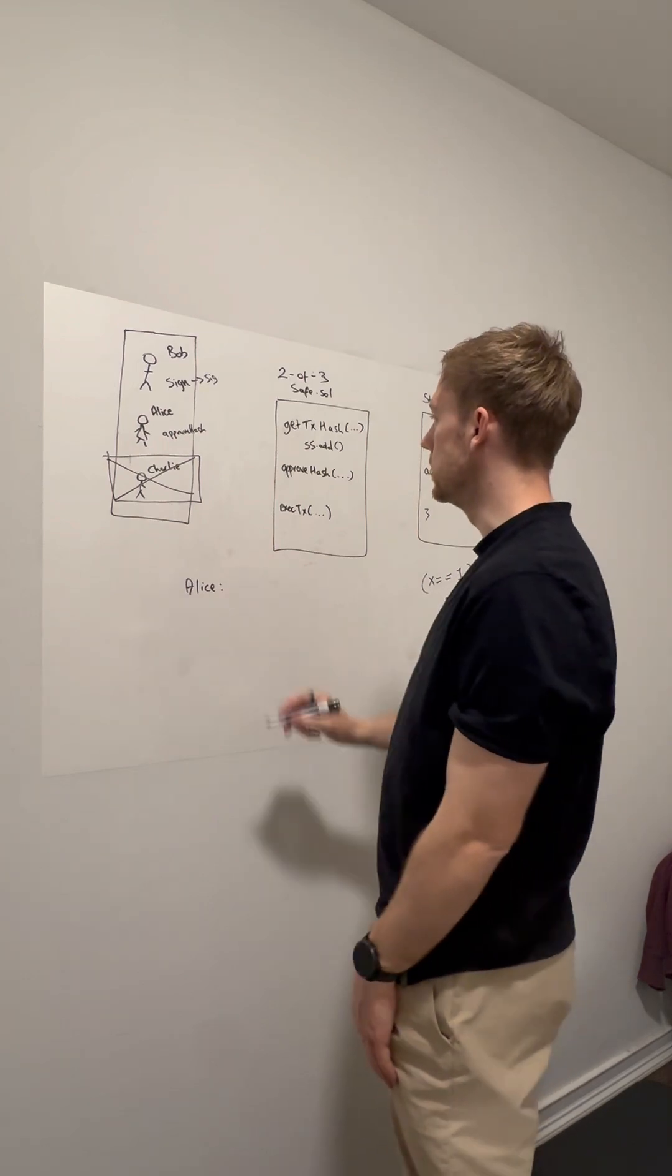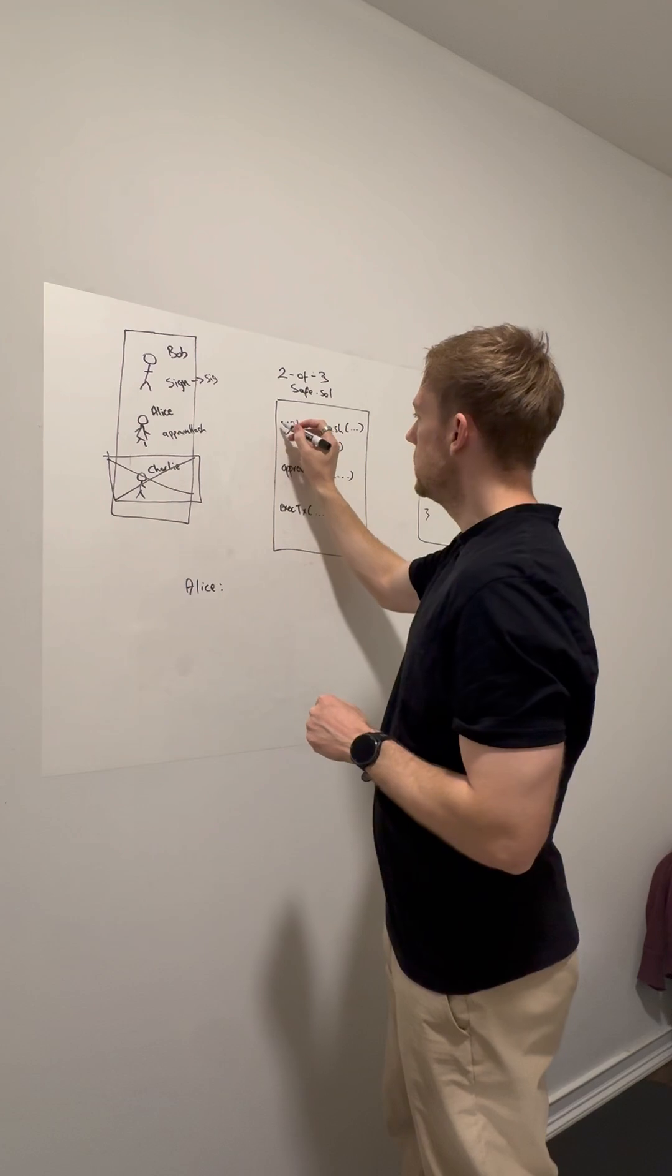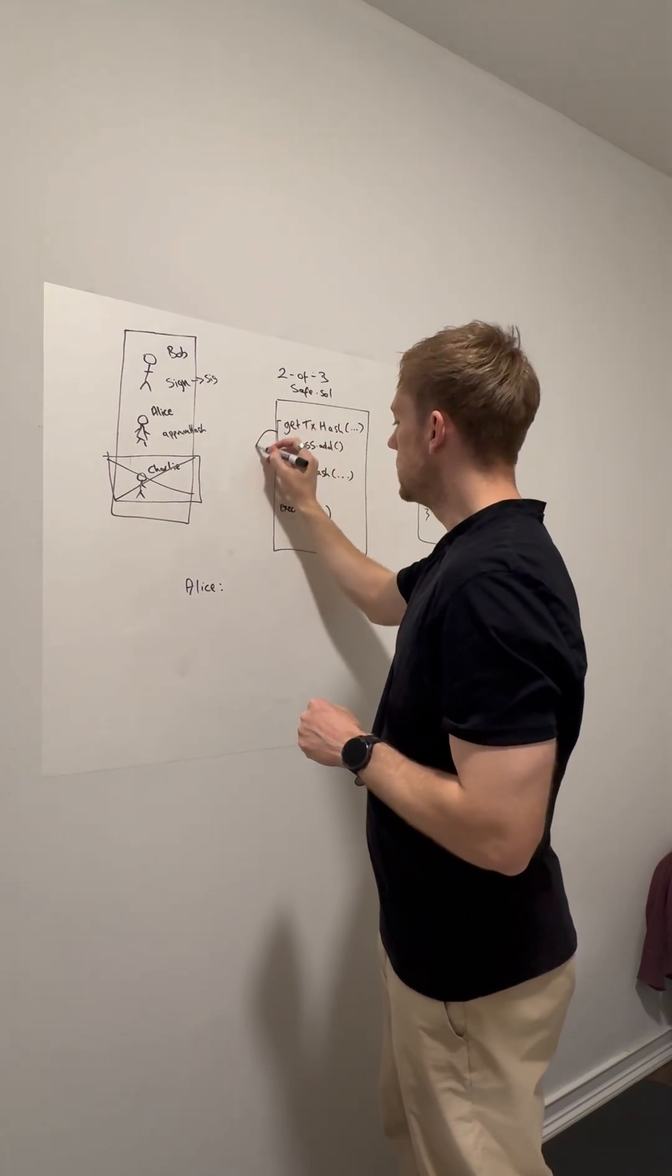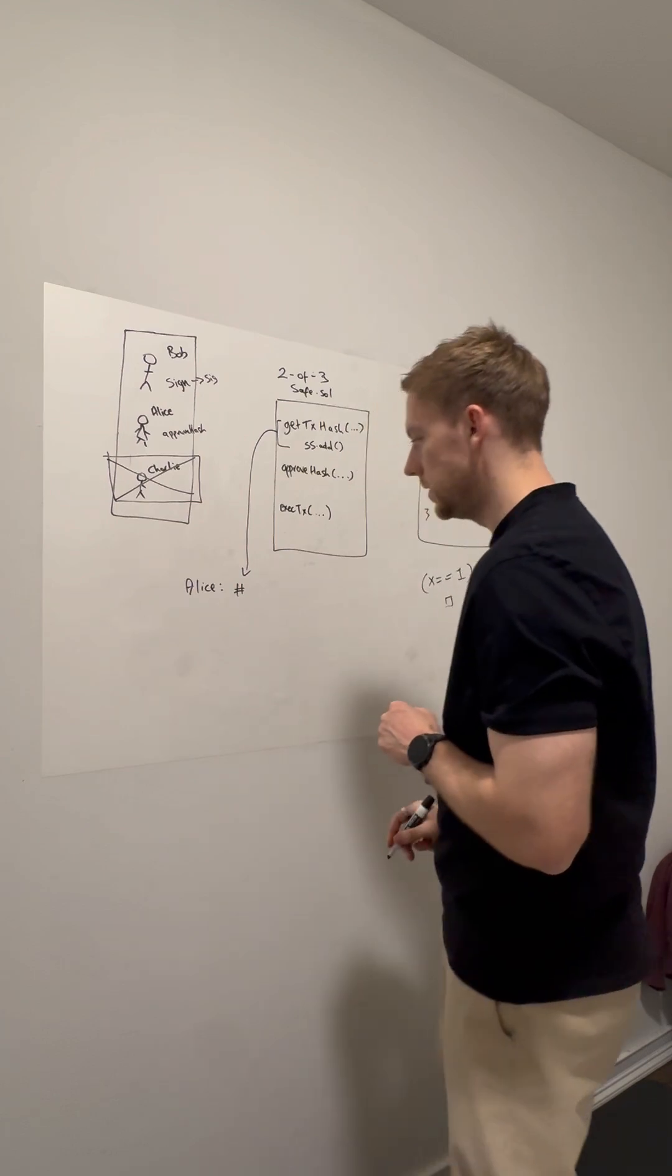Alice wants to call approve hash like she's already signaled. What she needs to do is get the hash first. She calls approve hash and gets the hash.